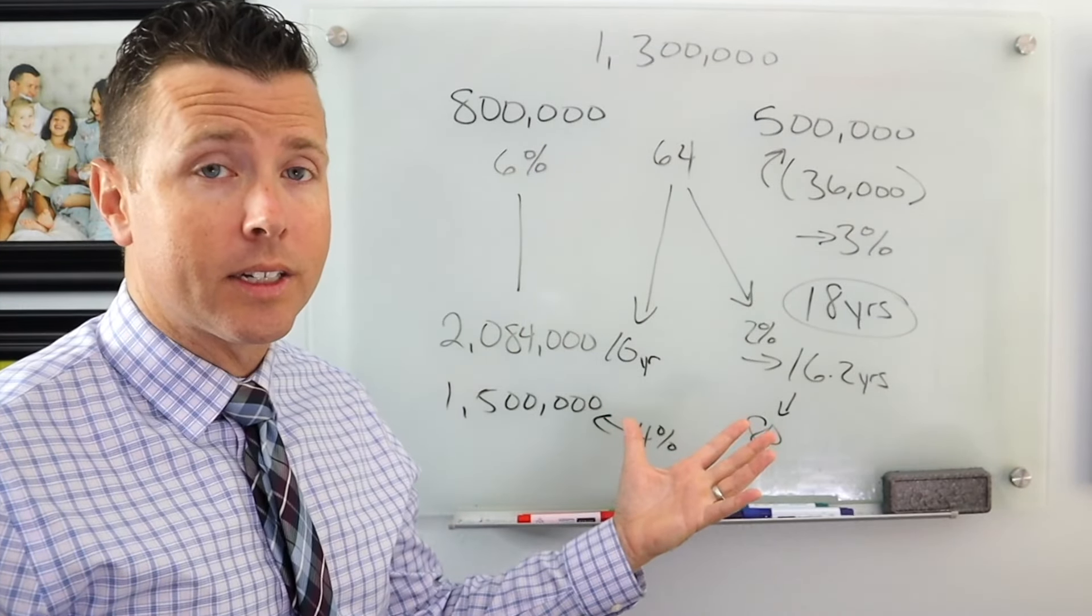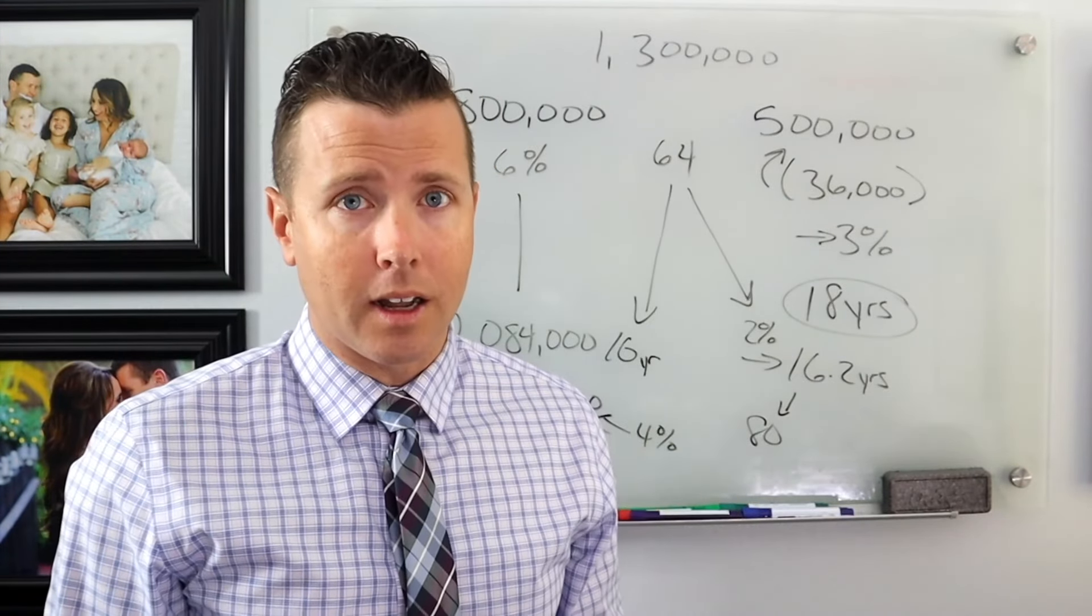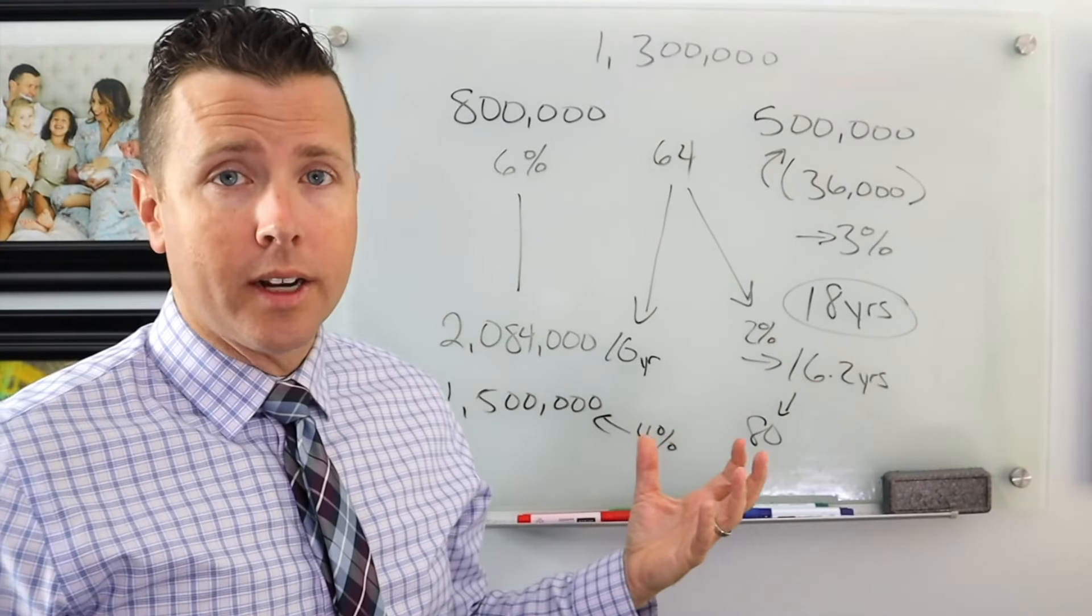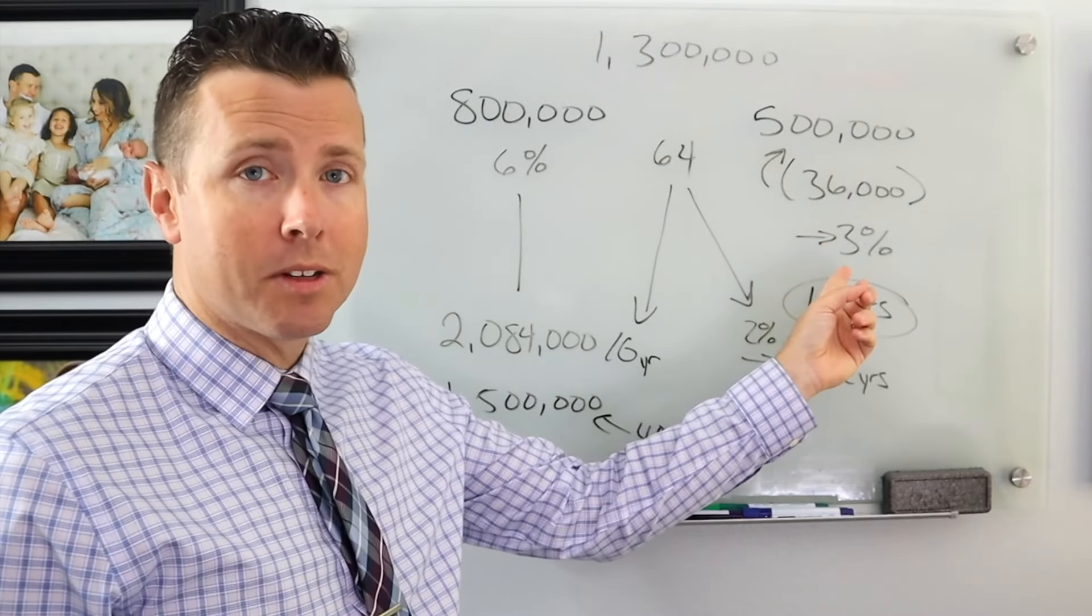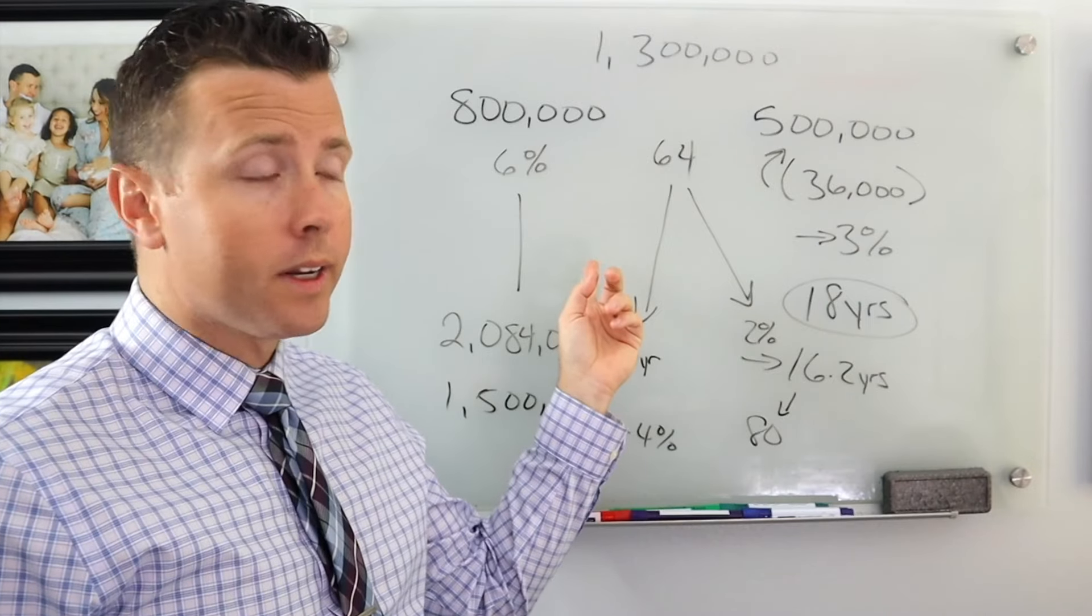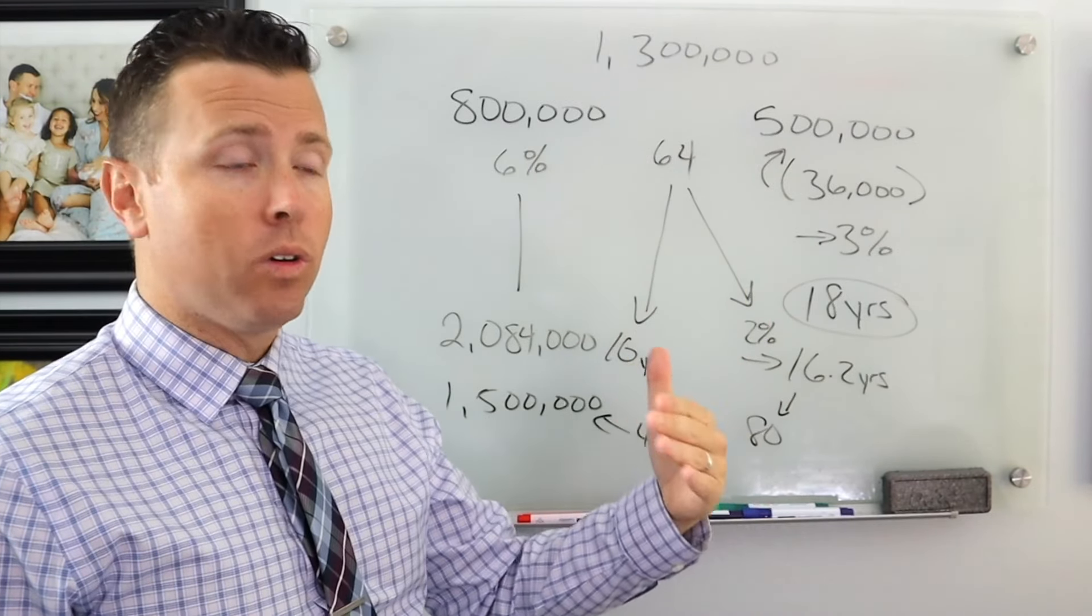Now you can run through these scenarios. Just find a future value calculator online and run through these scenarios for yourself. And that'll give you a good idea of how much you want to keep conservative versus how much you want to keep growing. And these buckets can change as you get older.